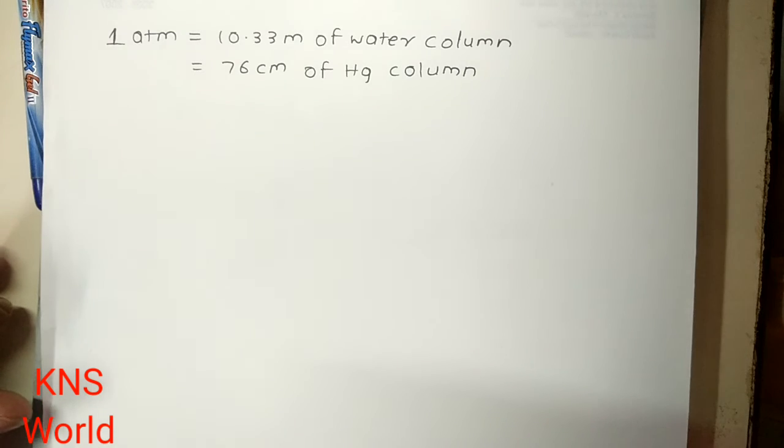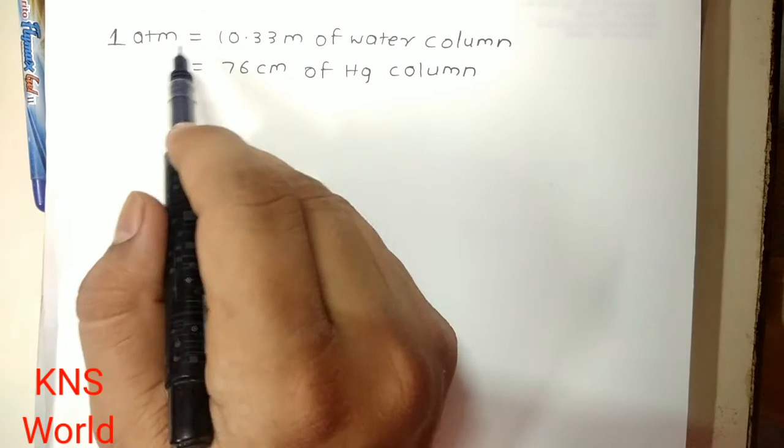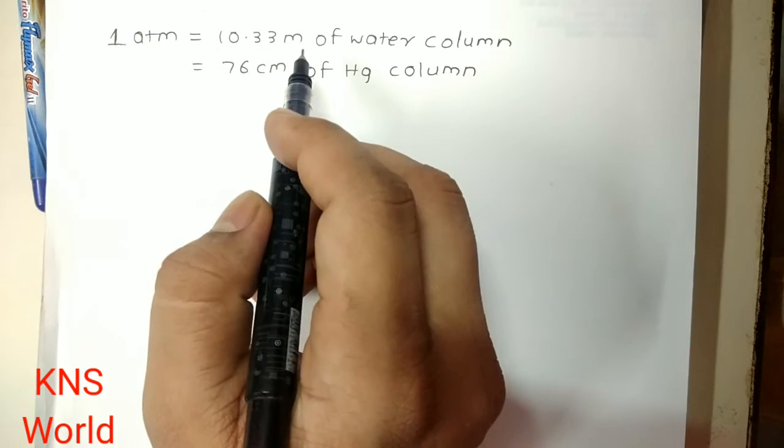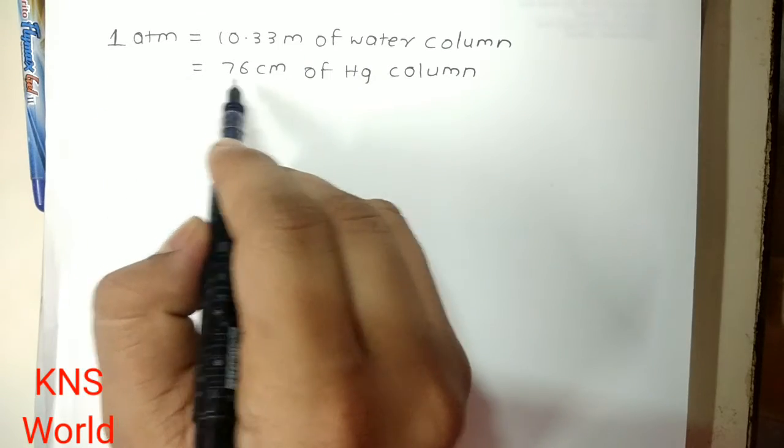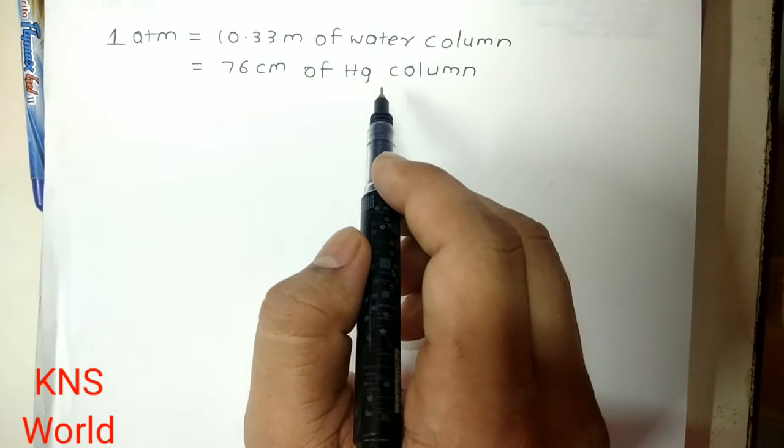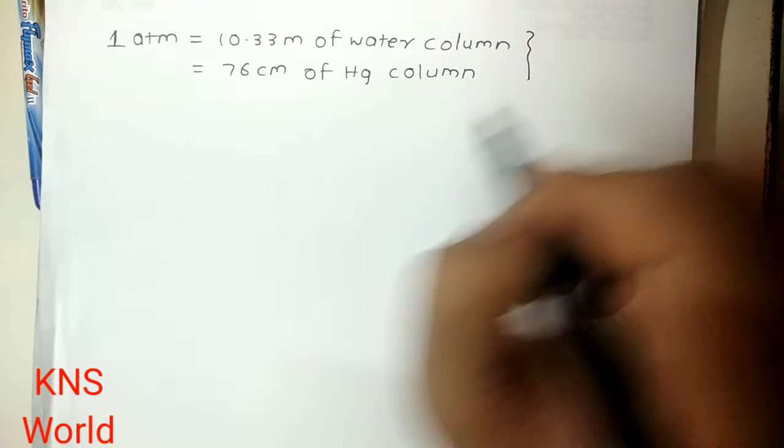Good afternoon, today we are finding how 1 atmospheric is equal to 10.32 meter of water column and also 1 atmospheric is equal to 76 centimeter of Hg column is possible. So we are finding these two things.